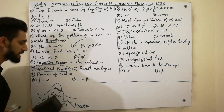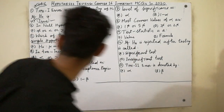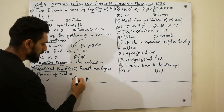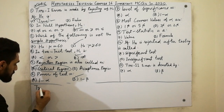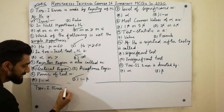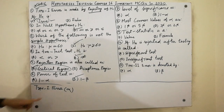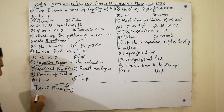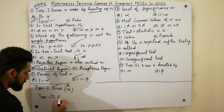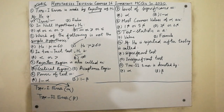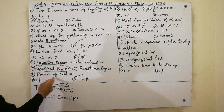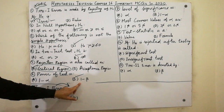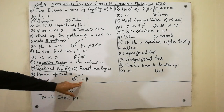Next: power of the test. Must remember these key points: Type I error is denoted by alpha. Type II error is denoted by beta. Power of the test is equal to 1 minus beta. So power of test = 1 minus beta. Must remember that.